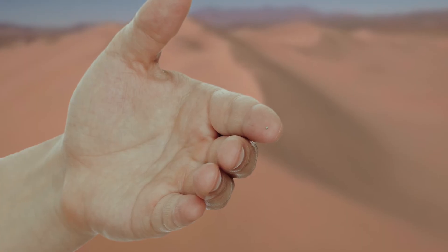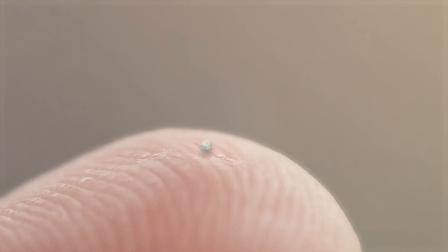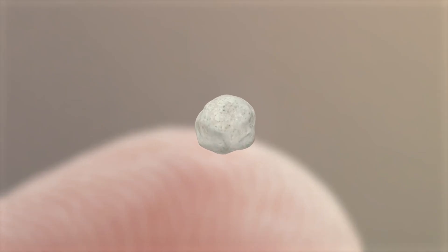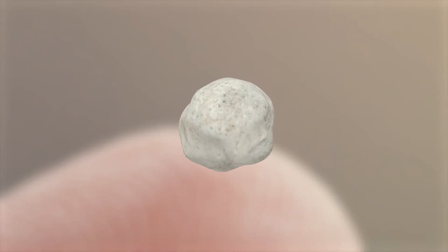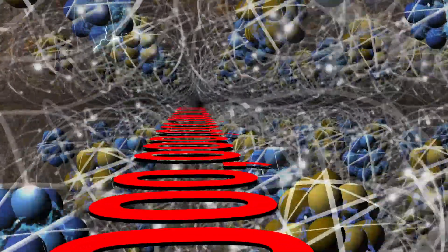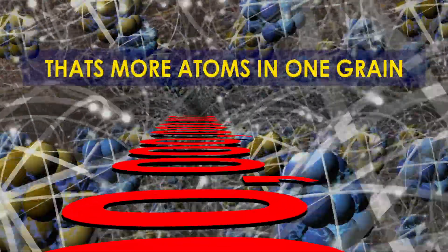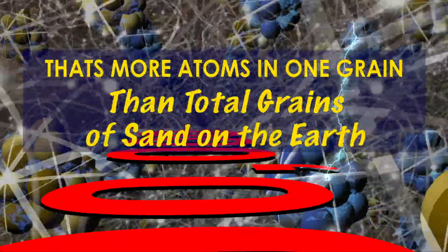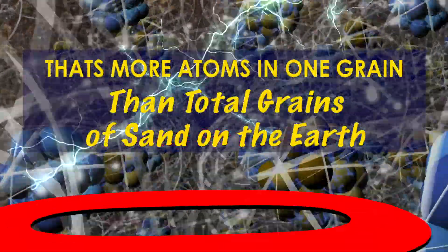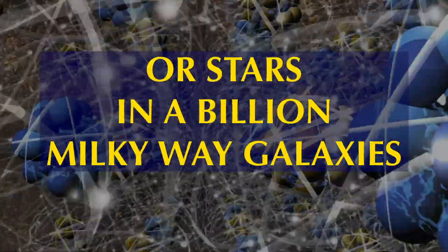But that may not be the most amazing part of this story. A single grain of sand, four one-hundredths of an inch in diameter, contains approximately 500 billion billion individual atoms. That's more atoms in one grain than total grains of sand on the Earth, or stars in a billion Milky Way galaxies.